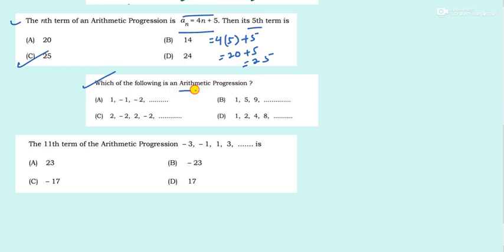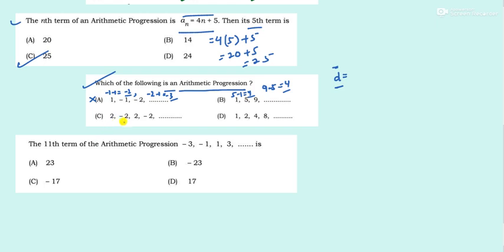Next question: Which of the following is an AP? To check whether a series is in AP, the common difference must be the same throughout. For option A: −1 − 1 = −2, then −2 − 1 = −3, different — not an AP. For option B: 9 − 5 = 4, 5 − 1 = 4, same difference. For option C: the difference changes sign. For option D: gaps are 1, 2, 4 — not constant. So only option B forms an AP.